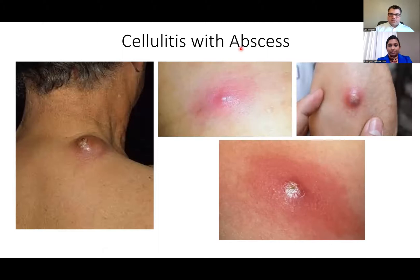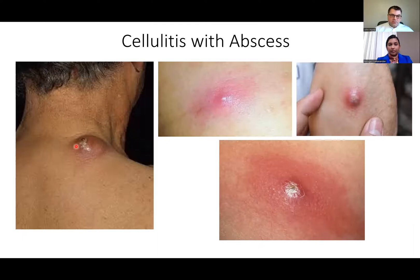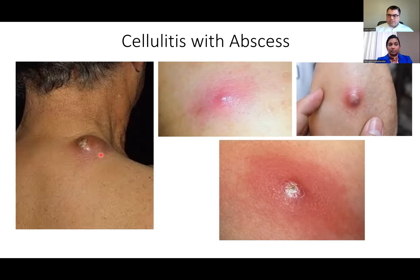Here are some examples — this is cellulitis with abscess. These images show pus, and you can see the abscess without much surrounding cellulitis. This needs incision and drainage, a few days of antibiotics, and culture and susceptibility to make sure you're covering the right organism — covering MRSA if needed, which is most likely in community-acquired abscesses. All of these will need incision and drainage; that's really the most important thing.